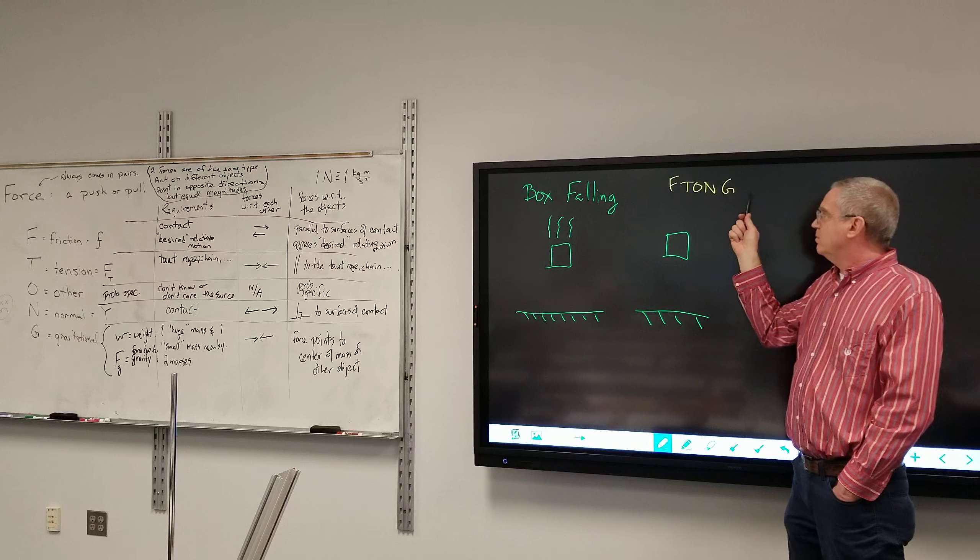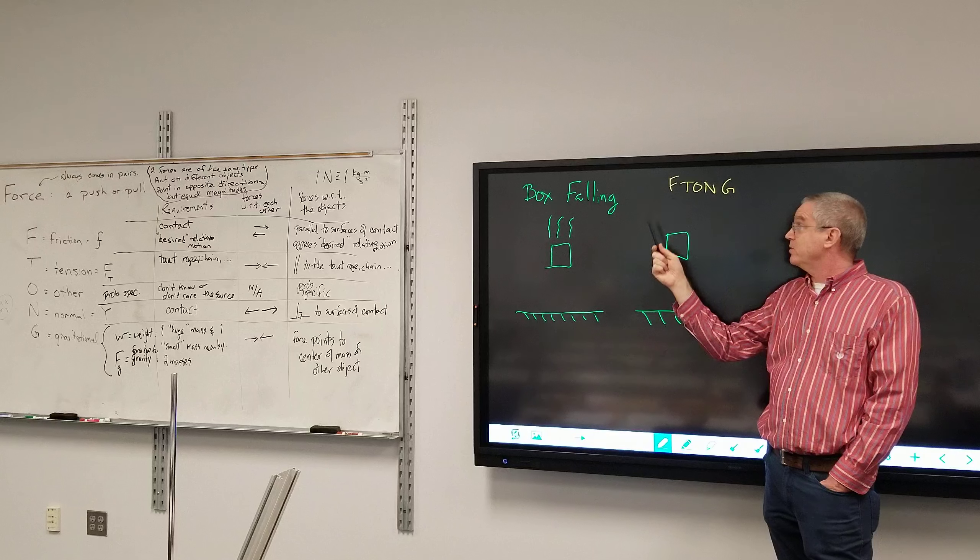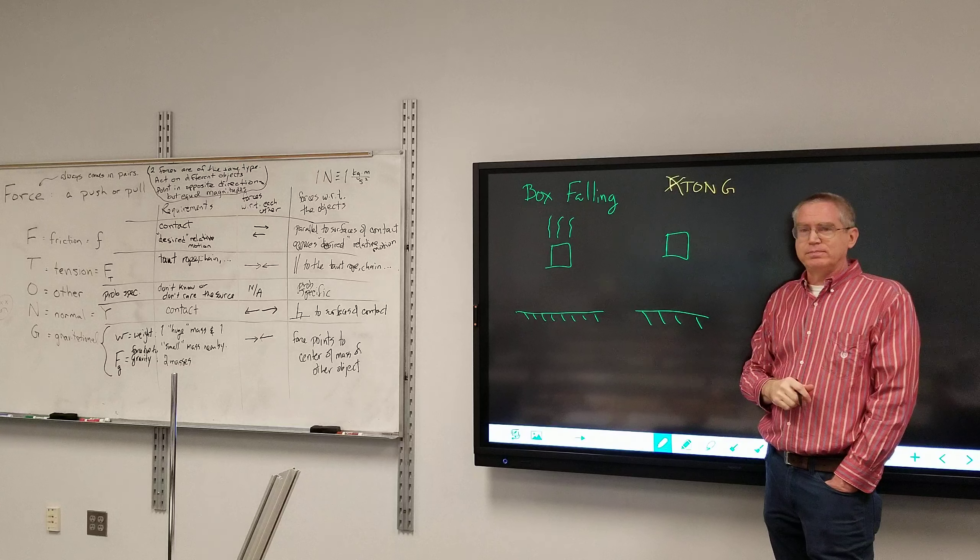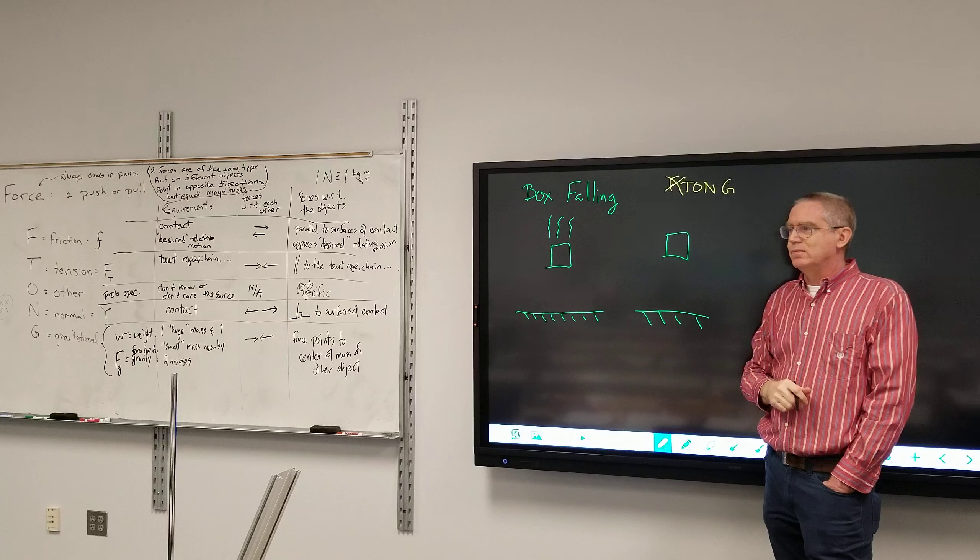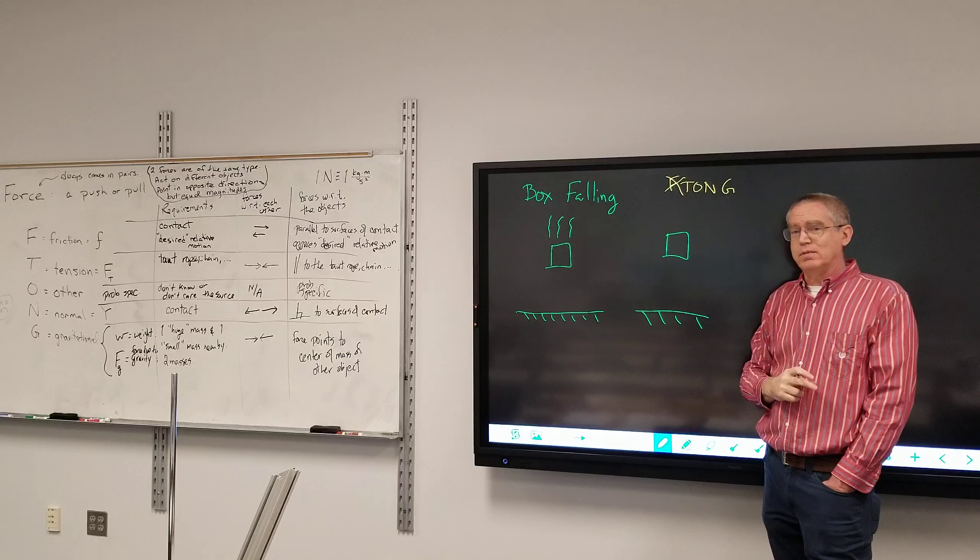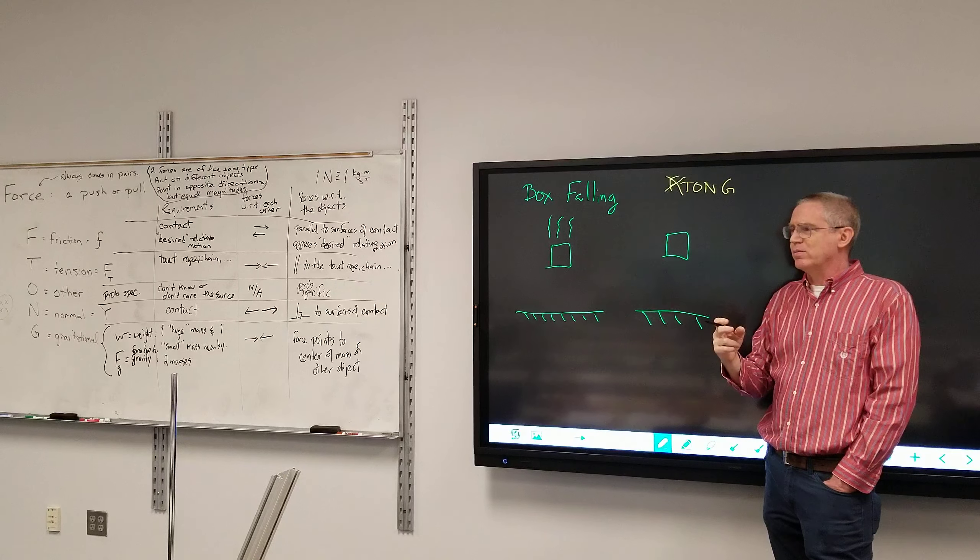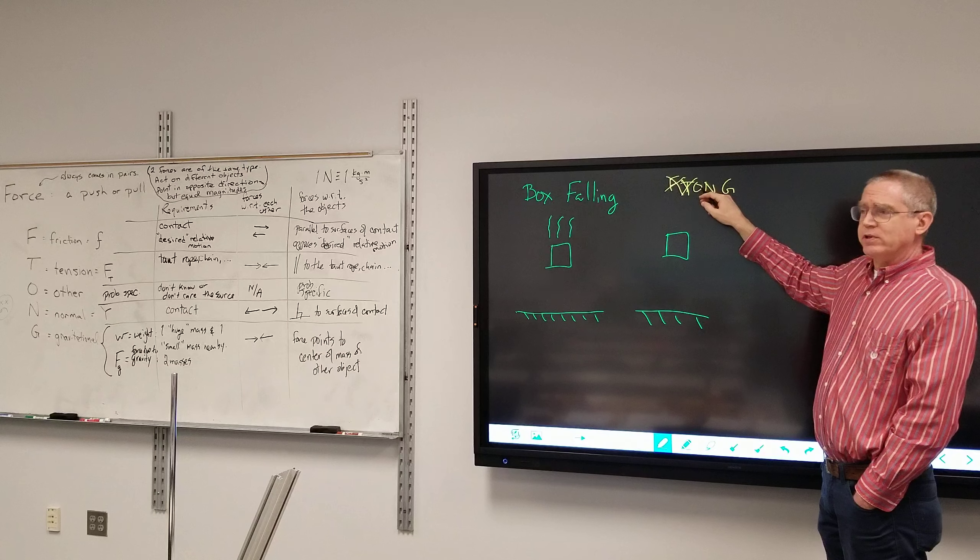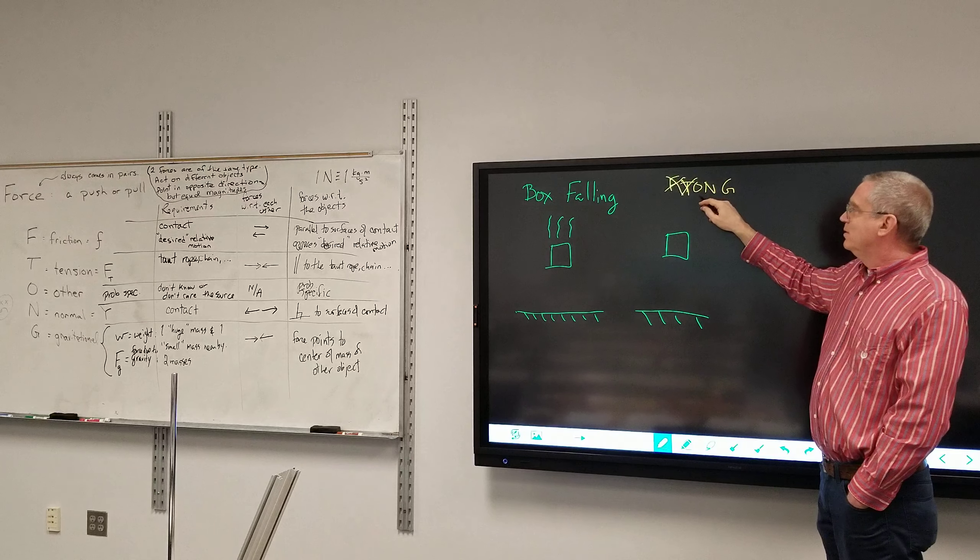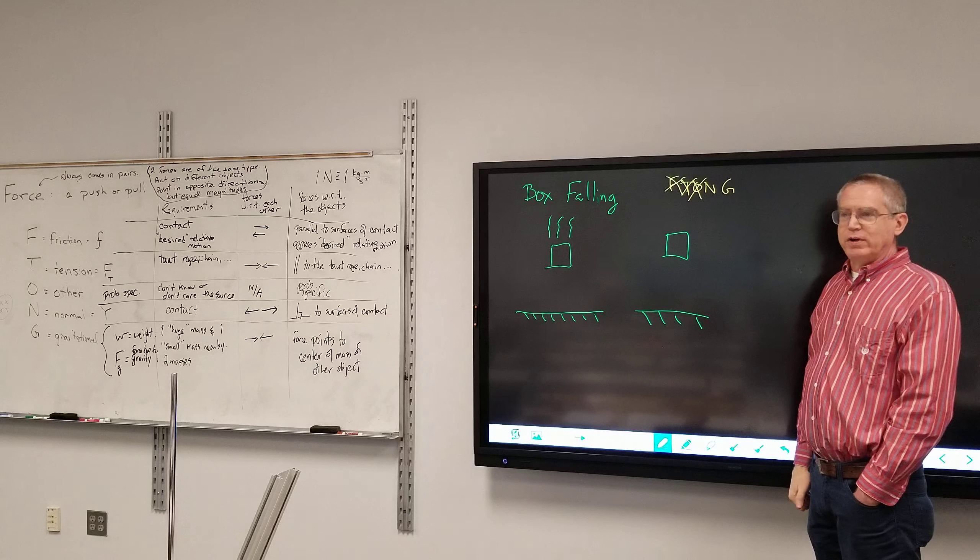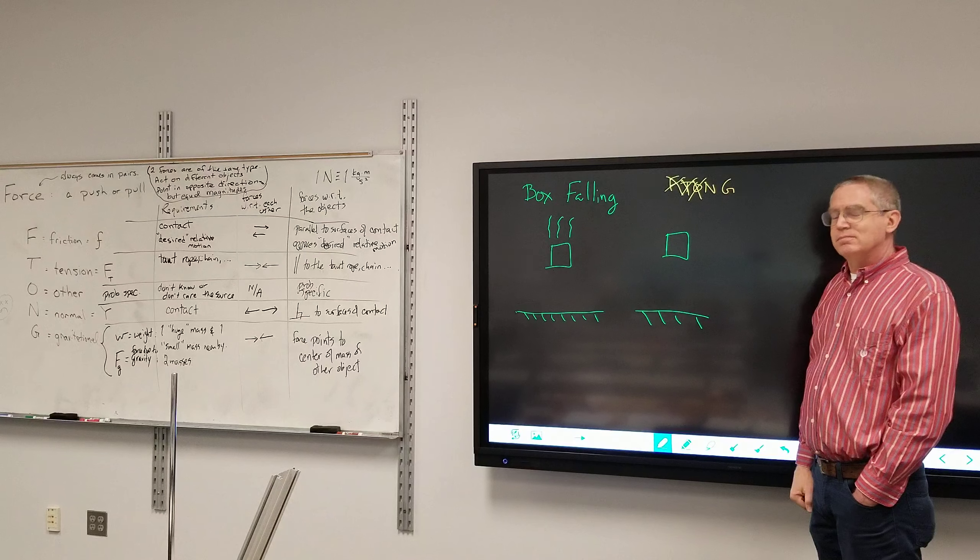All right, so now we go through the list, and we figure out first, is there anything we can get rid of? For example, is there any friction to the problem? Is there any tension? Got a no there. No tension. Because I don't have anything pulling on it, other than the Earth. Did I talk about any mysterious force here? Not really. Yeah, that's just a civilized falling. Normal force. Is there a normal force involved? Normal requires, remember, requirement, contact. Is the box touching anything? No.